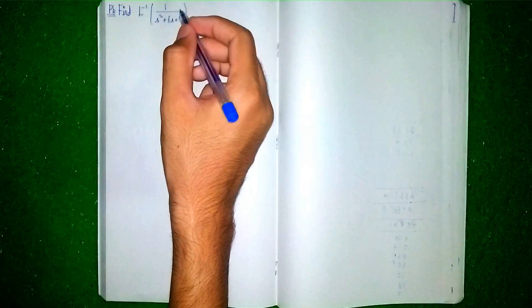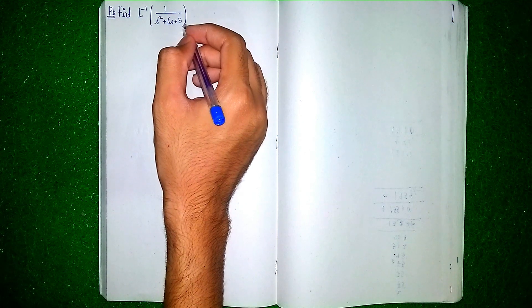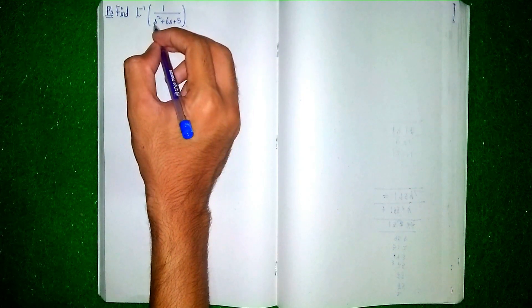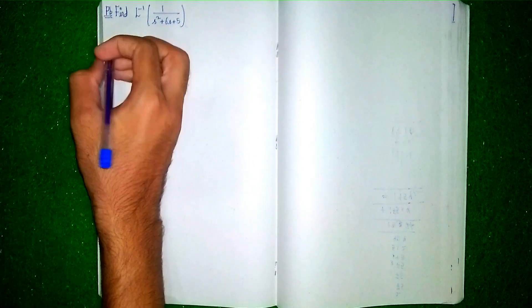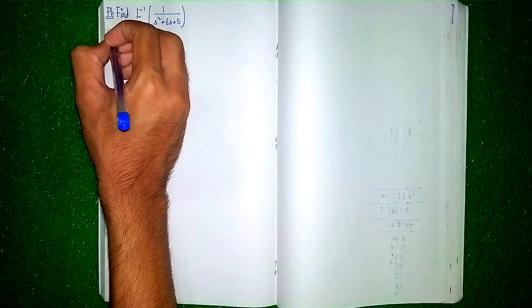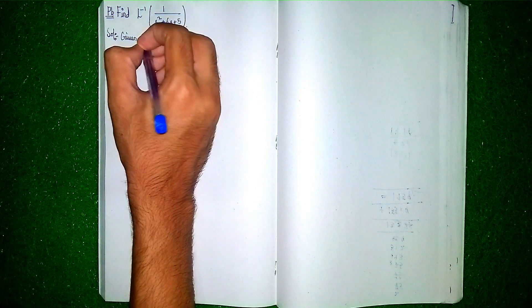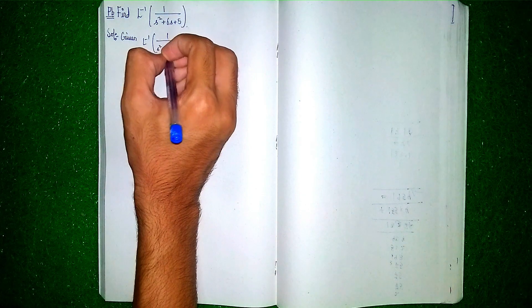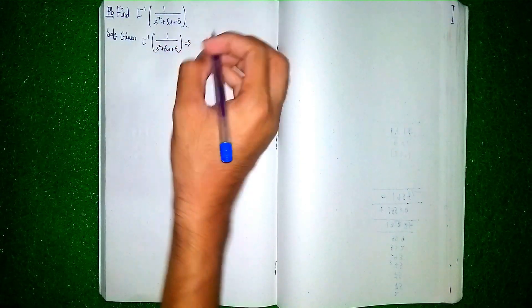Hello, welcome back to my channel. Today's question: find the Laplace inverse of 1 divided by s squared plus 6s plus 5. This is a Laplace inverse question. It is given in quadratic form, so we have to factor it and then solve by partial fractions. First, write the given expression: Laplace inverse of 1 by s² + 6s + 5.